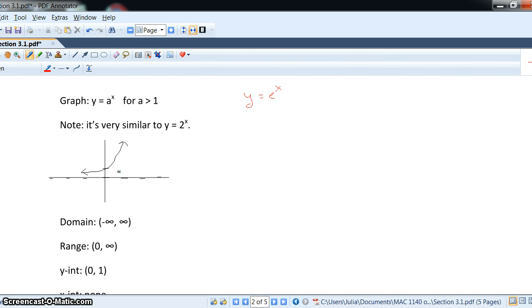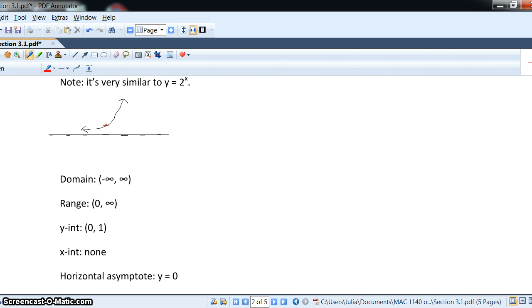Y-intercept is the point (0, 1) right here. There are no x-intercepts for the standard one, and there is a horizontal asymptote, as we said, y equals 0.